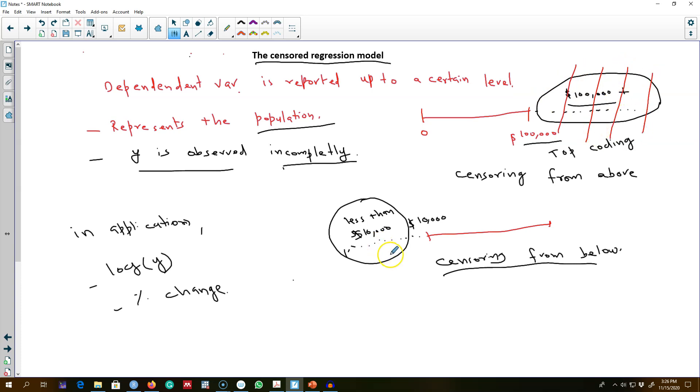Similarly, we may ask a question: what is the saving behavior of people with income level above $10,000? So in this case, we will omit this part of the sample and observe only observations above $10,000 in our sample.